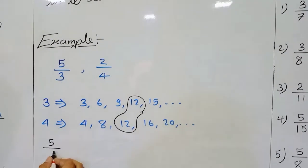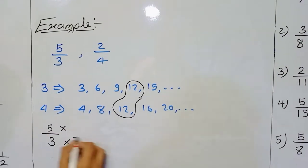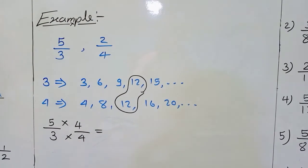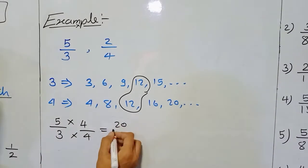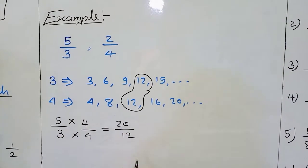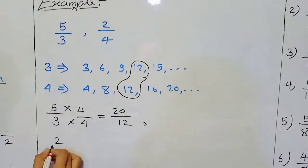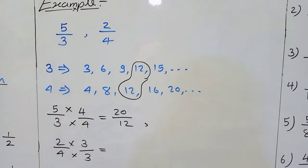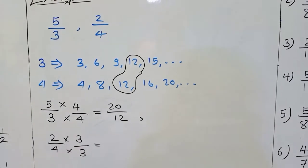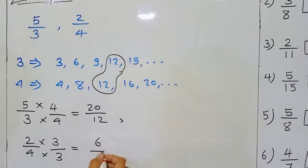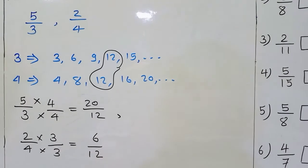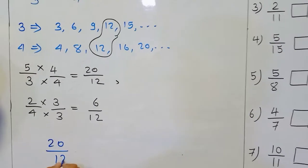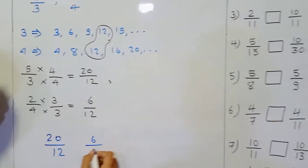So for 5 upon 3: since 3 times 4 equals 12, we multiply both numerator and denominator by 4. That gives us 5 times 4 = 20 and 3 times 4 = 12, so we get 20 upon 12. For the second fraction, 2 upon 4: since 4 times 3 equals 12, we multiply both numerator and denominator by 3. That gives us 2 times 3 = 6 and 4 times 3 = 12, so we get 6 upon 12. Now we have both fractions as 20 upon 12 and 6 upon 12.